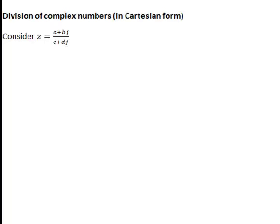Let's have a look at division of complex numbers in Cartesian form. Here we have an expression z equals a plus bj divided by c plus dj.